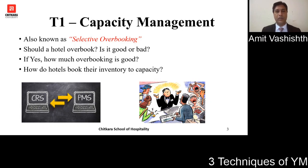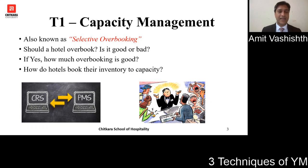Inventory basically means the number of rooms available for sale at a hotel. So if my hotel has 100 rooms, I have an inventory of 100 to sell every single day. Capacity management or selective overbooking signifies that each and every room needs to be sold on every single day.